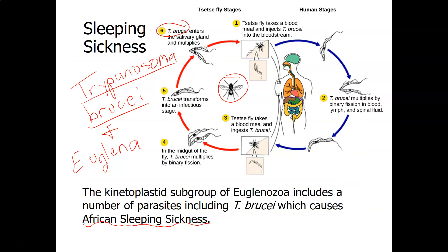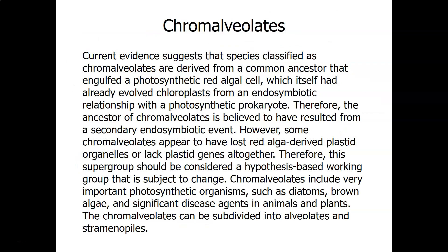The next supergroup we study is the Chromalveolata. The Chromalveolata include two subgroups: the alveolates and the straminopiles. The ancestor of Chromalveolata is believed to have resulted from a secondary endosymbiotic event — a combination of a red algal cell engulfed by another cell. You don't really have to memorize that, but it gives a little information about how they believe the Chromalveolata evolved.